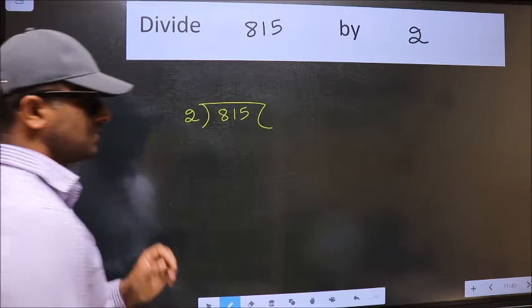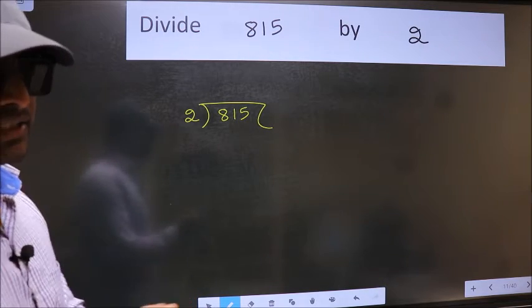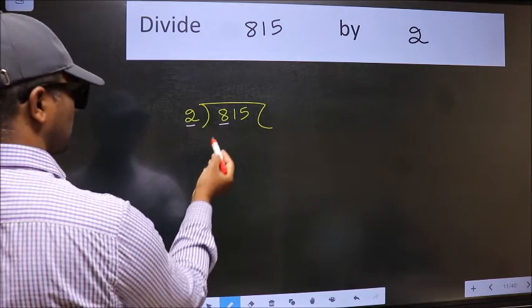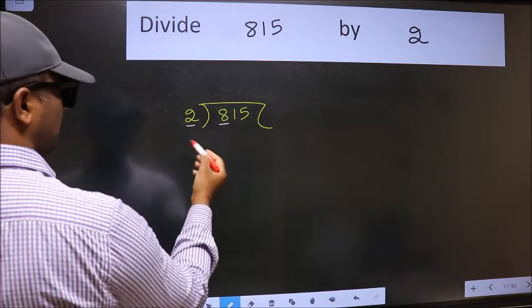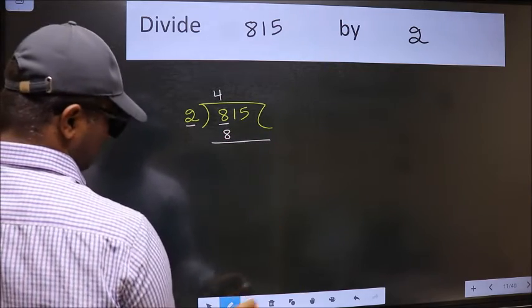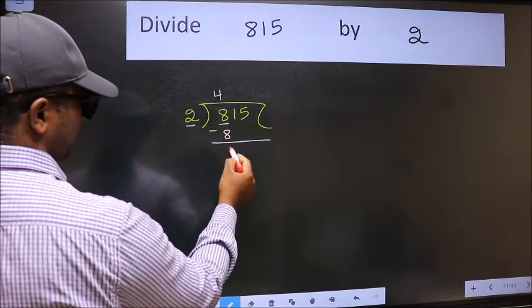This is your step 1. Next, here we have 8 and here 2. When do we get 8 in 2 table? 2 fours 8. Now we should subtract. We get 0.